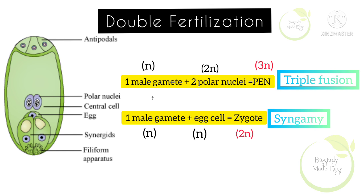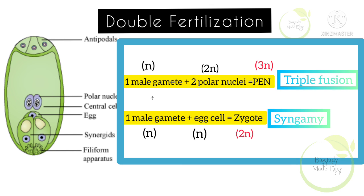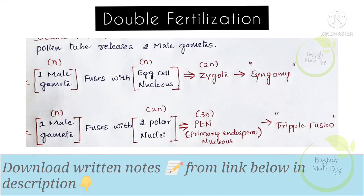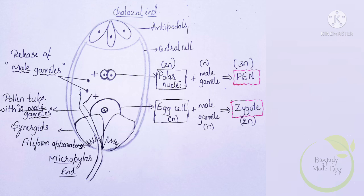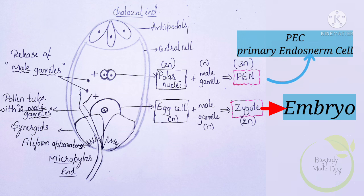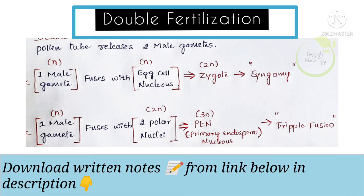The zygote formation through syngamy represents one fertilization event. Together, these two fertilization events constitute double fertilization. The primary endosperm nucleus will go on to form the endosperm, while the zygote will undergo embryo formation. These are the key steps of the double fertilization events.